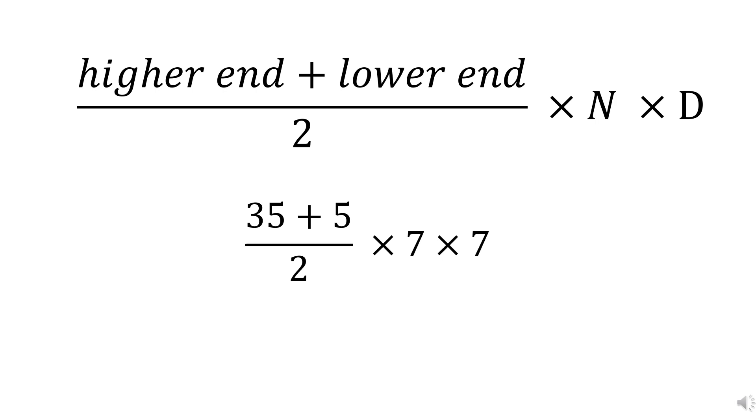And N is number of cycles taken from higher to lower end. So, from 35 mg to 5 mg and we're reducing dose 5 mg, it takes 7 cycles to reach 5 mg from 35 mg. Therefore, N is equal to 7.